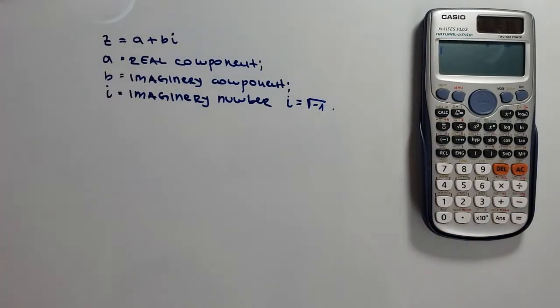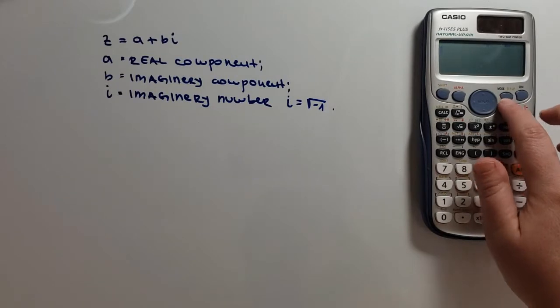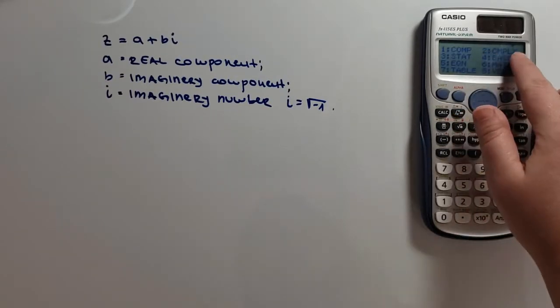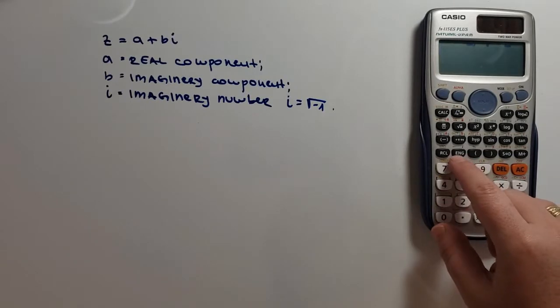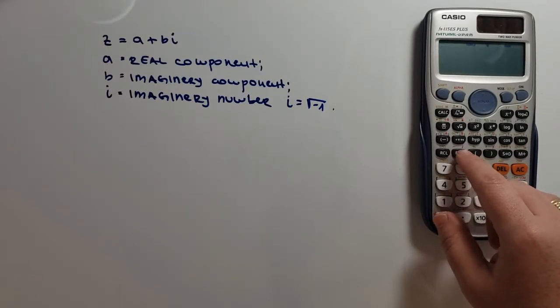To access the complex number mode on the Casio calculator, we go to mode, and we choose 2 for complex. And now, when we are in this mode, we can use the number i. And we will use this button, and you can see the i number here.